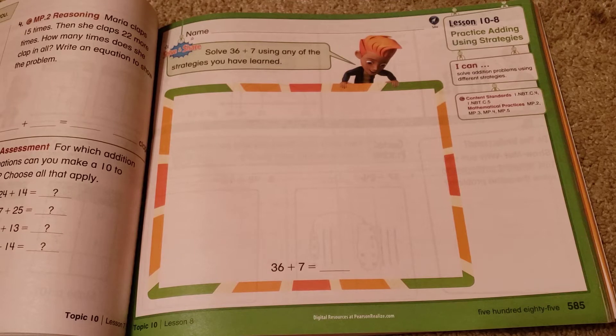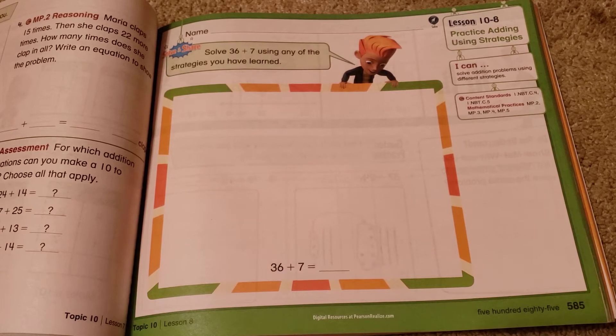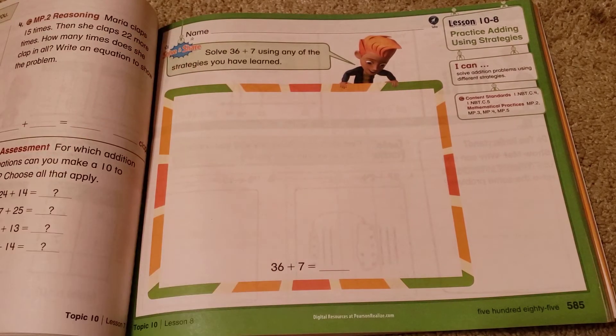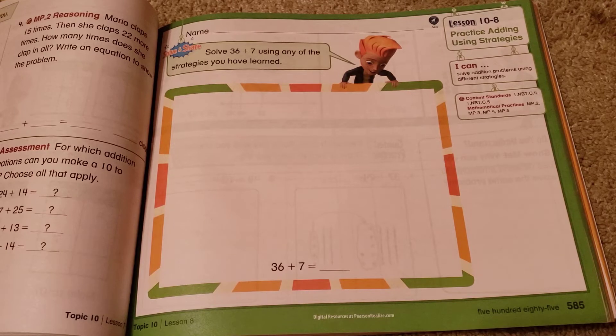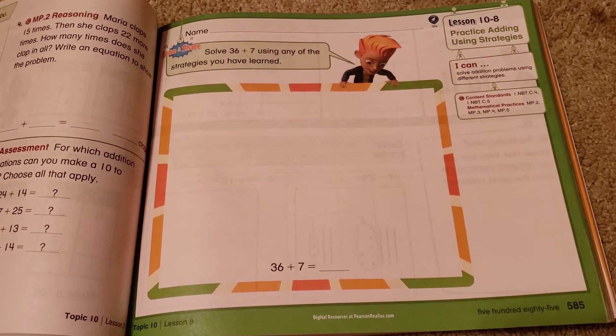We've learned our make a 10 strategy where we draw it out and when we have 10 ones we can make, turn it into a 10. We know we can count on to add, right? When we say 36, 37, 38, 39, we count up. We can break apart numbers to add. We can draw it out. We can use an open number line. There's lots of different ways we could do it and there's no right or wrong way, as long as you're getting the correct answer. The strategy you use is basically up to you.